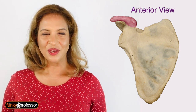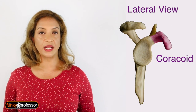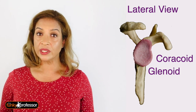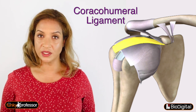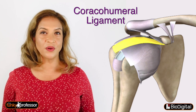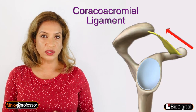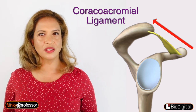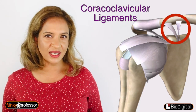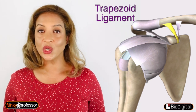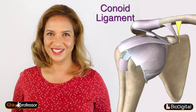Question five: the coracoid process is one of three bony projections extending from the lateral part of the scapula, the others being the glenoid and the acromion. The three muscles that attach to the coracoid are the coracobrachialis, the short head of biceps, and the pectoralis minor, which attaches to the medial aspect. The four ligaments are: the coracohumeral ligament, providing stability to the glenohumeral joint; the coracoacromial ligament, which spans from the coracoid process to the acromion of the same scapula; and the two coracoclavicular ligaments — the trapezoid and the conoid — which stabilise the acromioclavicular joint.